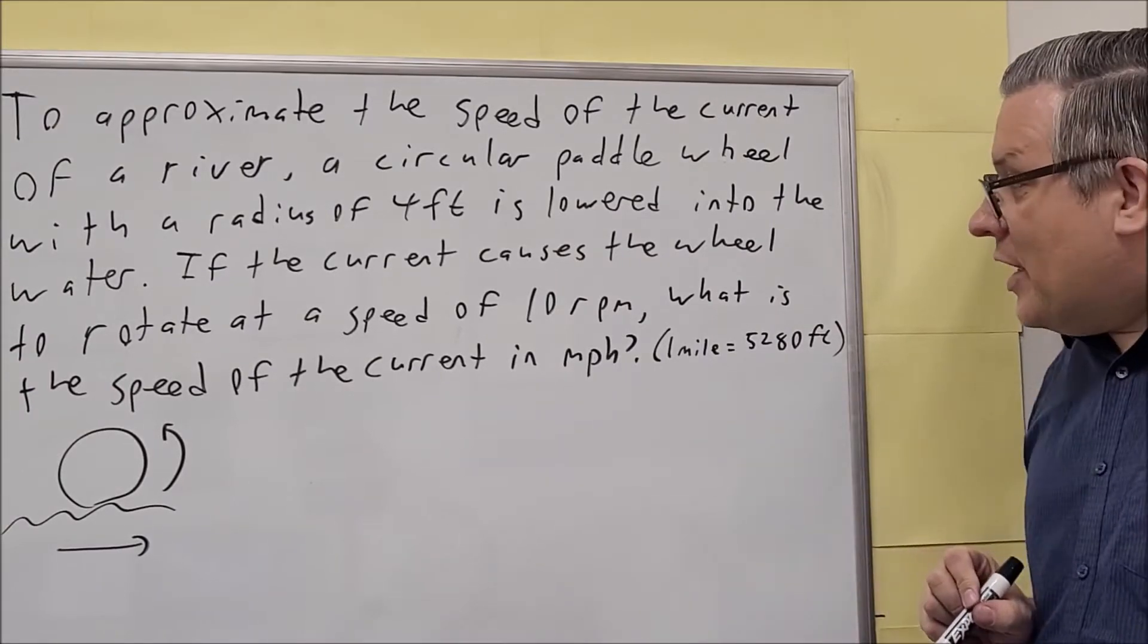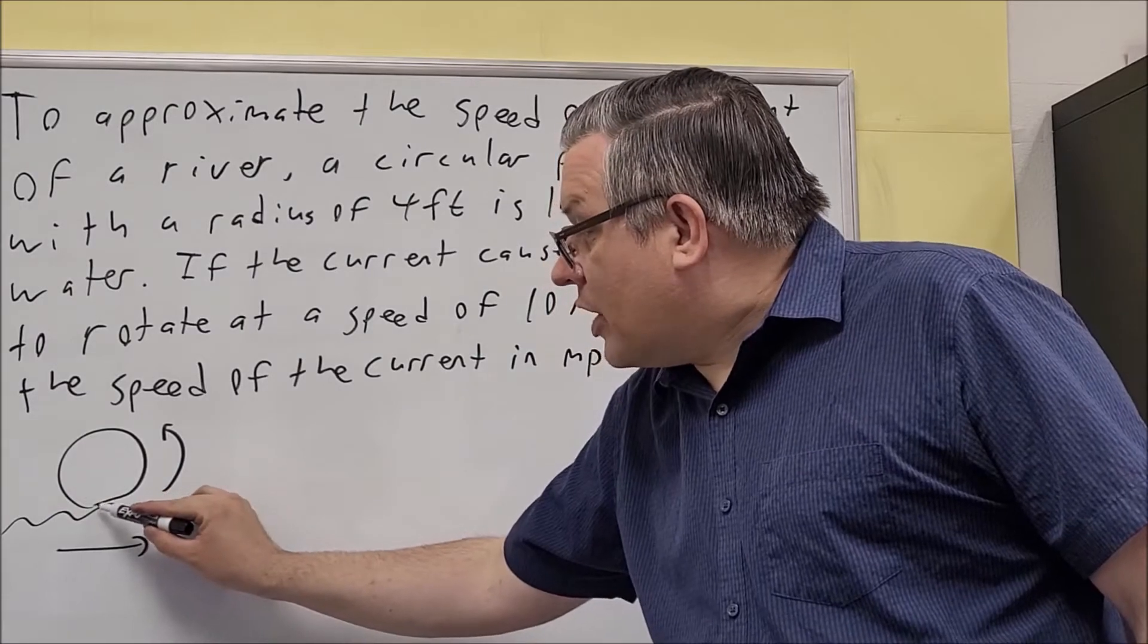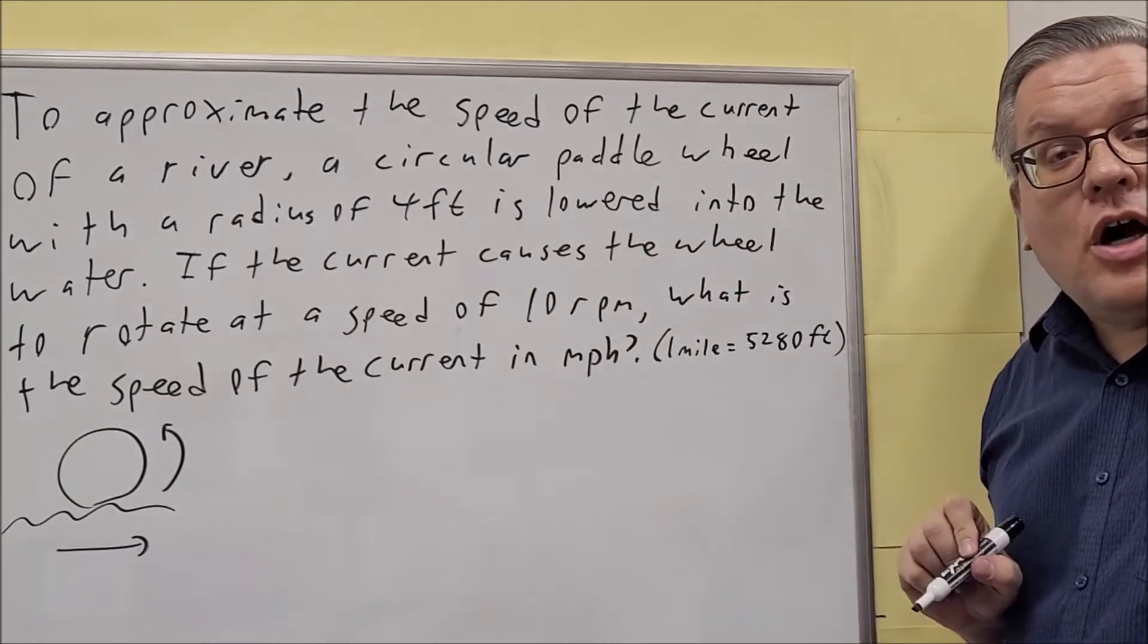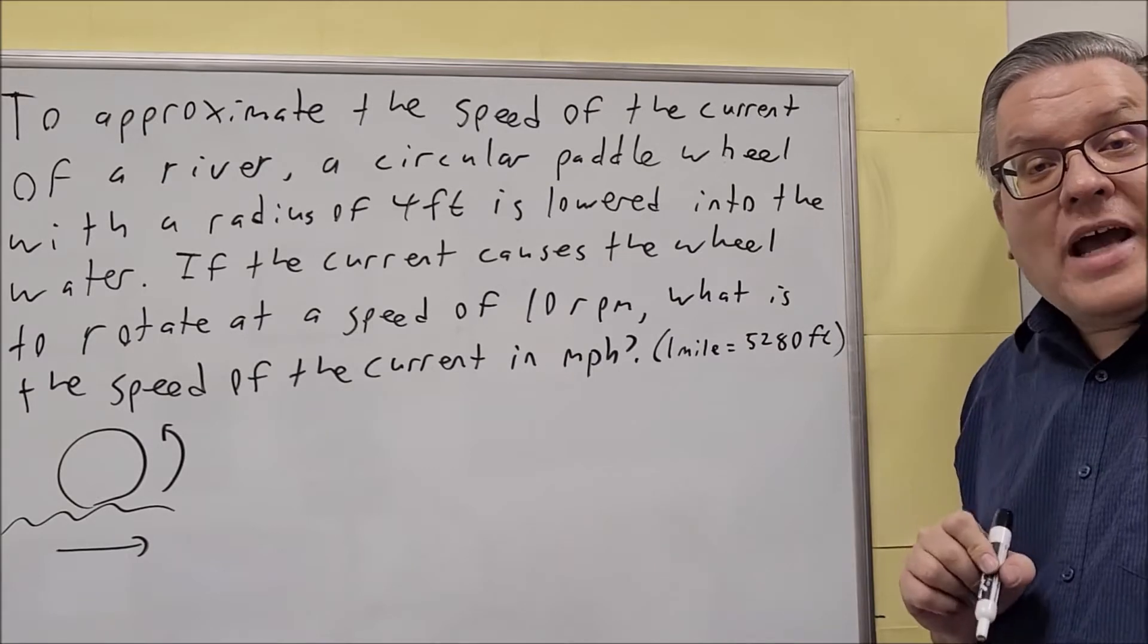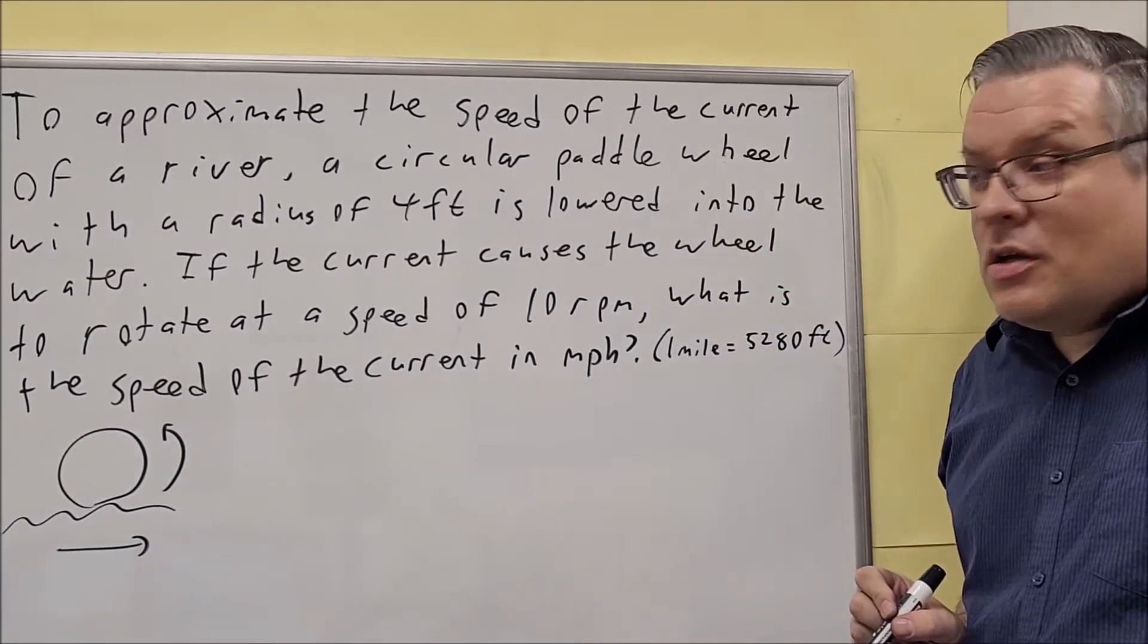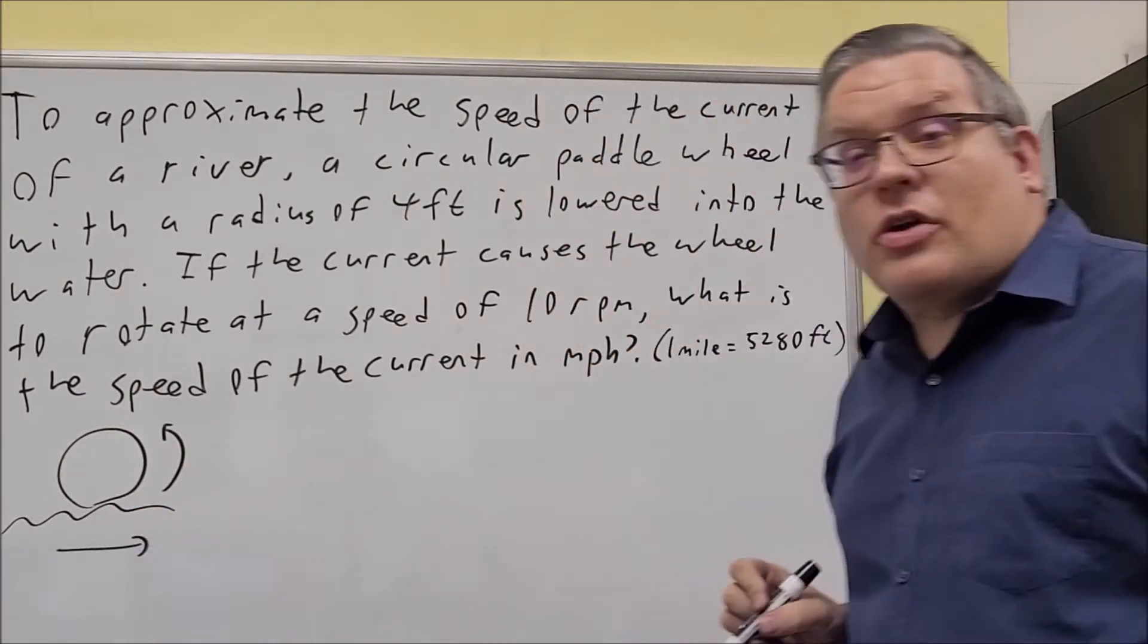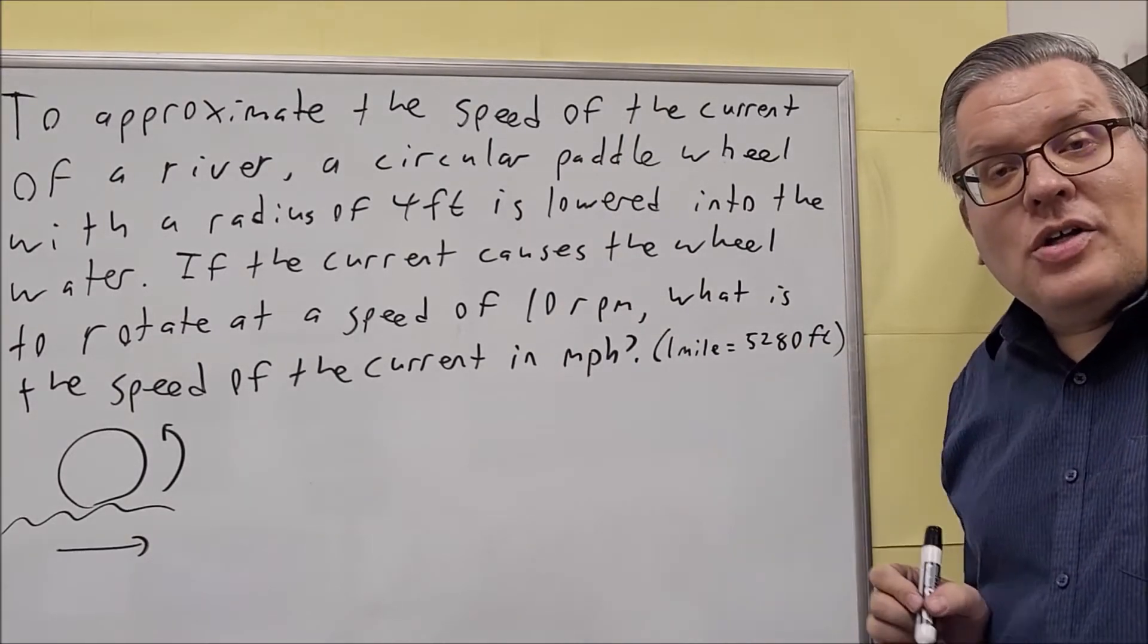Now we want to find the speed of the current. The speed of the current is right here, which means that at the very edge of the paddle wheel, whatever the speed of the paddle wheel is, that's also going to be the speed of the current as well. So what that's asking us to find is going to be linear speed. The same speed on the outside of the wheel is going to match with the speed of the current. So ultimately for this problem we have to find linear speed.